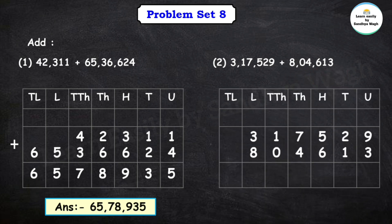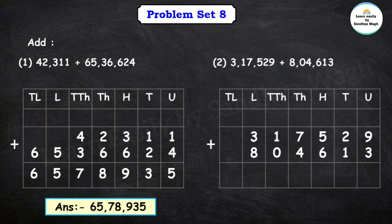The next question is 3 lakh 17,529 plus 8 lakh 4,613. Let's add these two numbers. First we will add the units place. 9 plus 3 is equal to 12, so we write 2 in the units place and 1 will go as a carryover to the tens place.